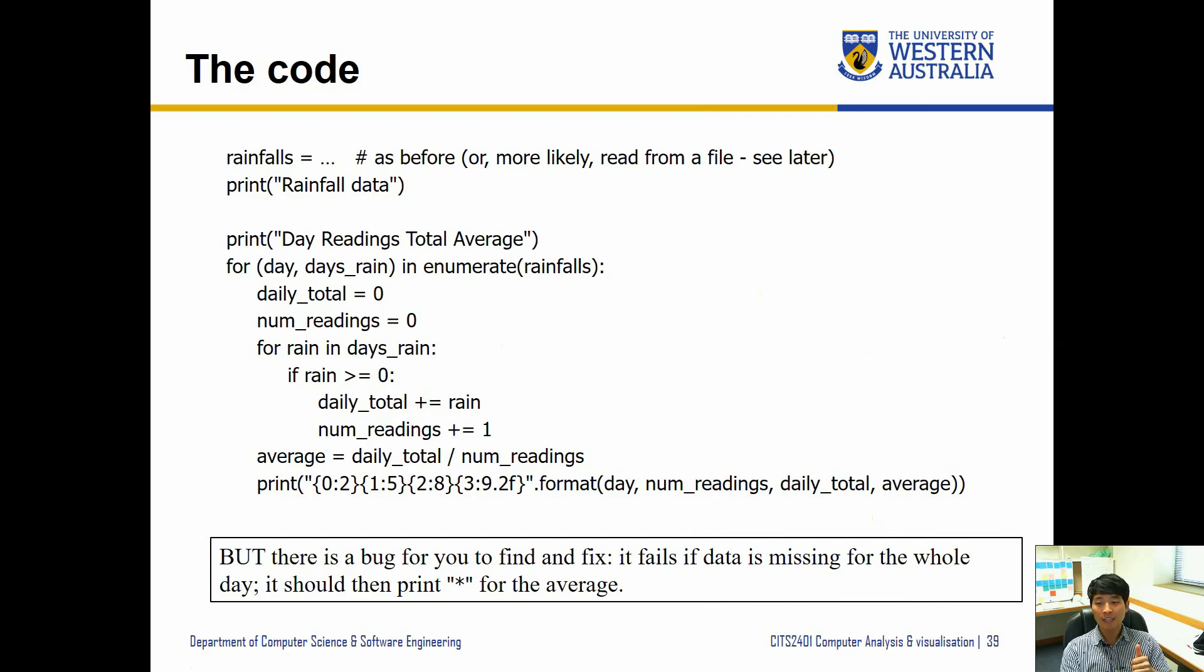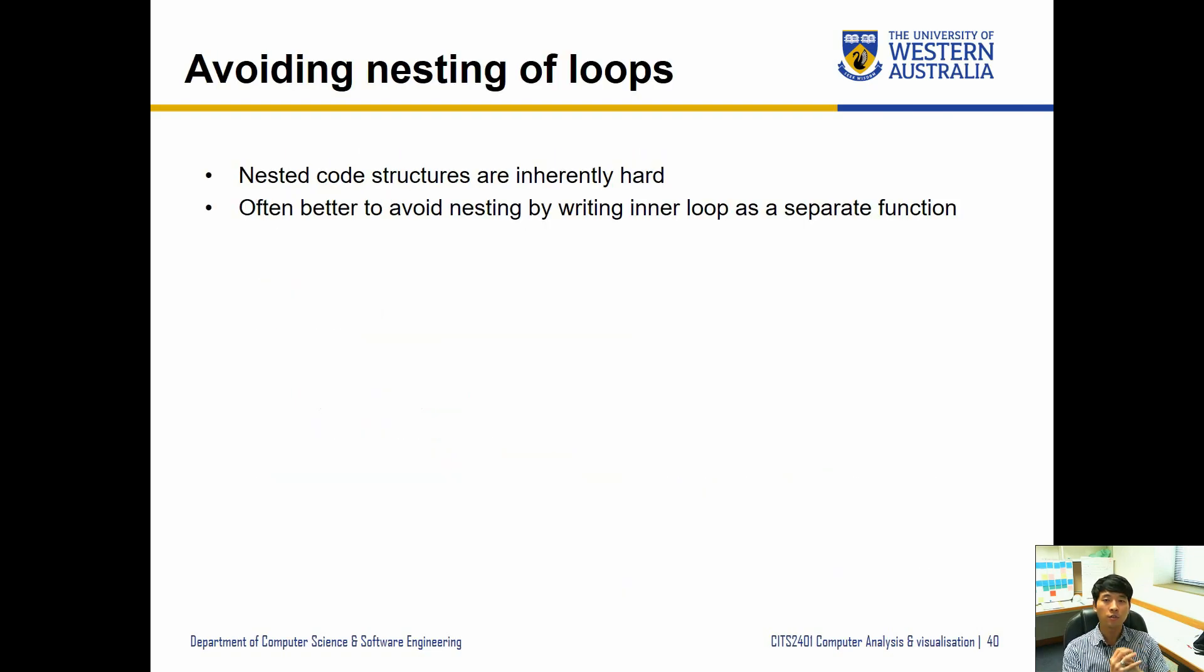For example, it fails if the data is missing for the whole day. Then it should print star for the average, for instance. So if the whole day has negative readings, then it should print a star instead. So you can try to fix this code to do that as well.